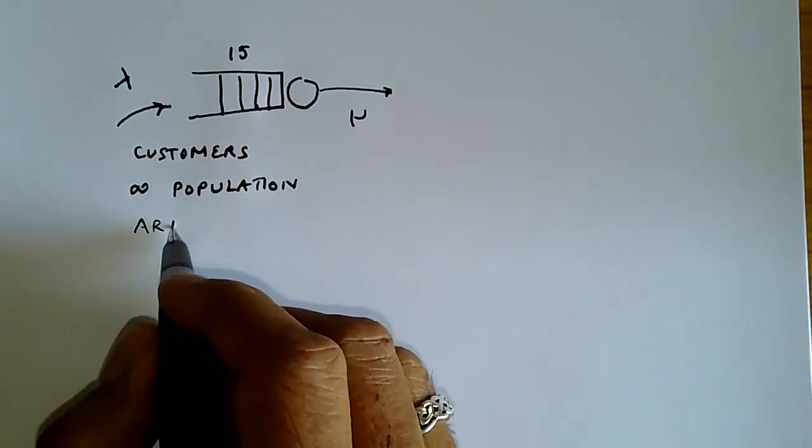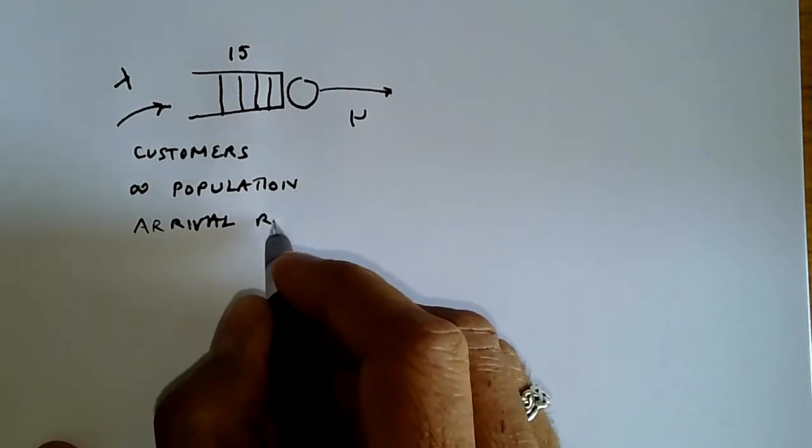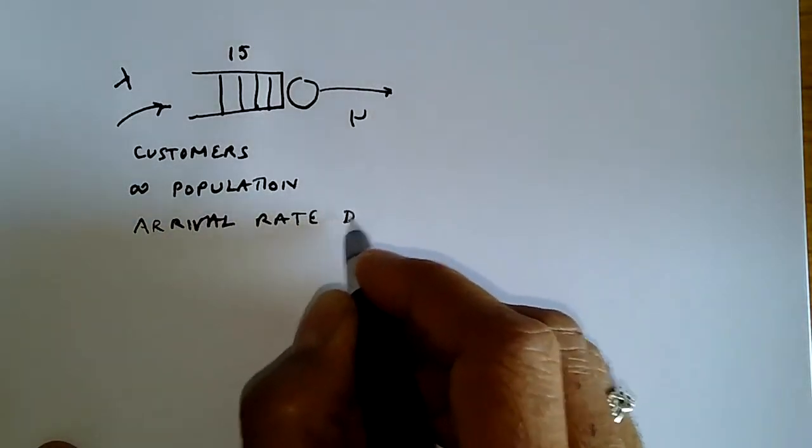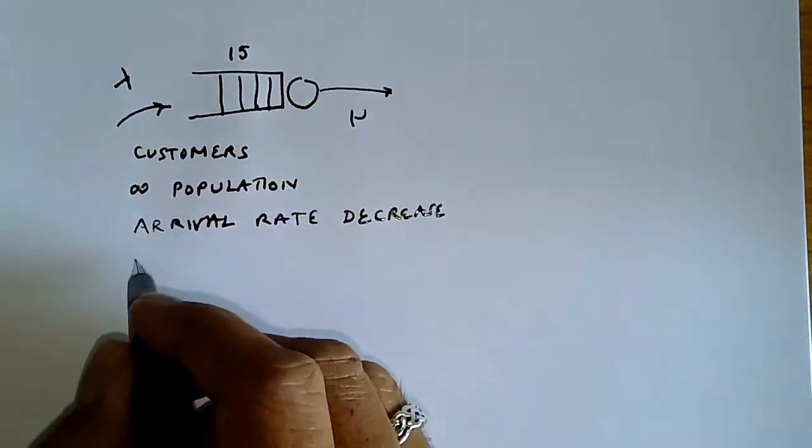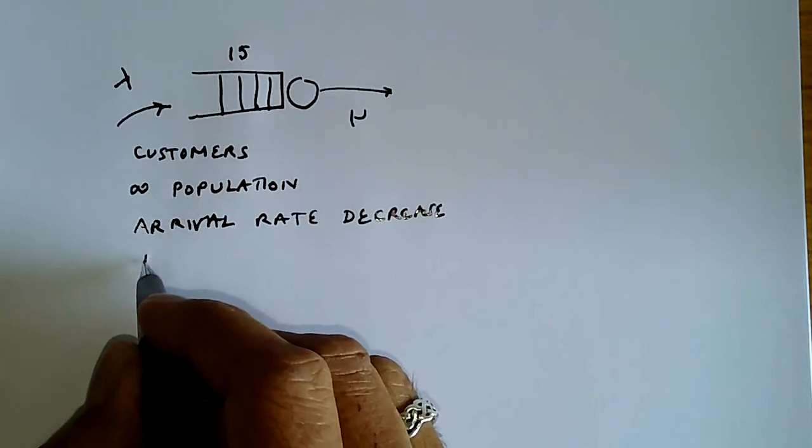The arrival rate is therefore going to decrease when the number of members in the queue, which is N, is large.